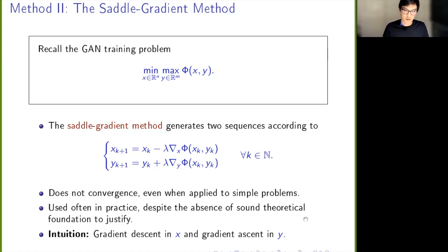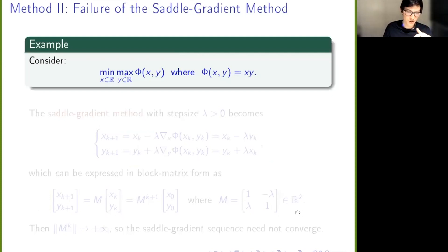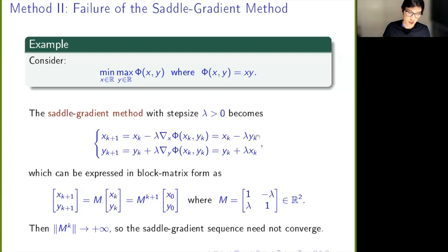I will skip the next slide, but let me just say that if you want to look at a problem where this method fails to converge, you don't have to try very hard. You just take the function φ(x,y) to be, for two real numbers, x multiplied by y, and this method doesn't converge. It's just some linear algebra to check, but you don't have to try very hard.